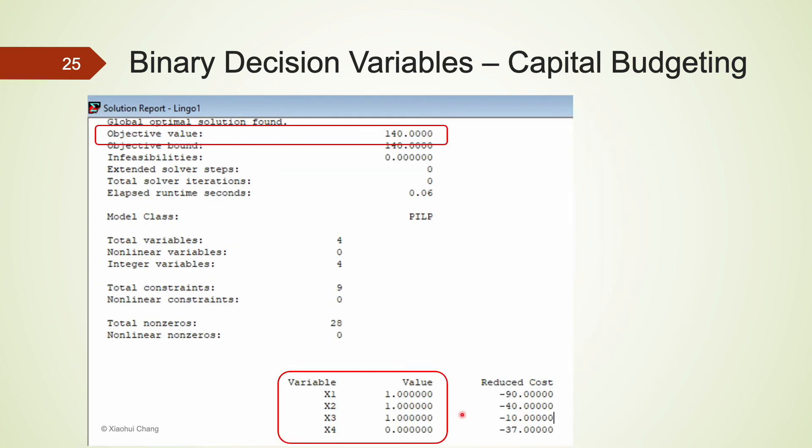Here is the optimal solution generated from LINGO. The optimal solution is to accept the plant expansion, the warehouse expansion, the new machinery project, but reject the new product research project for a total of a present value of $140,000. I hope you found this example useful. This also concludes this video. Thank you.